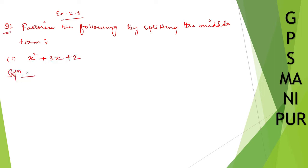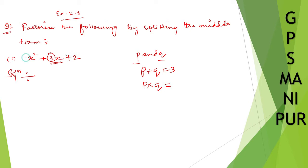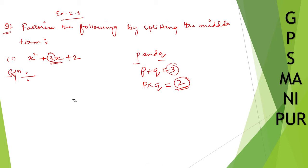Solution. We need to split the middle term. There must be two numbers — let's say p and q — such that p plus q must equal 3 (the middle coefficient) and p into q must equal 2 (the constant term). So we need two numbers that multiply to give 2 and add to give 3. Those two numbers are 2 and 1: 2 times 1 is 2, and 2 plus 1 is 3. So we rewrite 3x as 2x plus x: x squared plus 2x plus x plus 2.